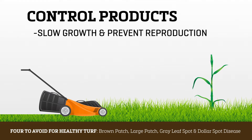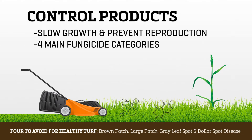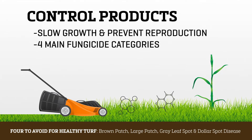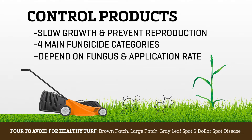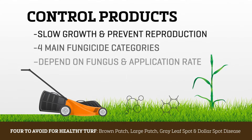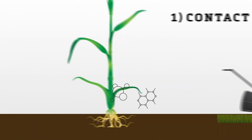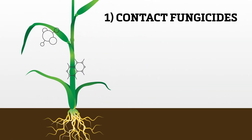Fungicides 101: fungicides are classified by how the chemical is used once applied. There are four main fungicide categories. The most effective product for the disease will depend on the prevalence of the present fungus as well as the desired reapplication rate.